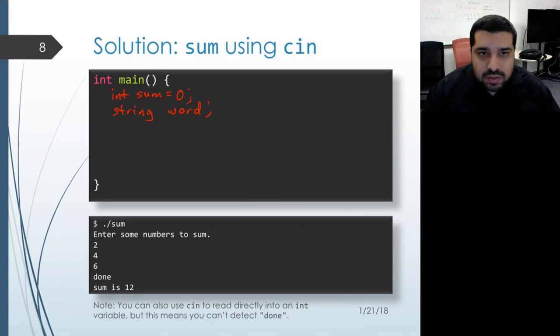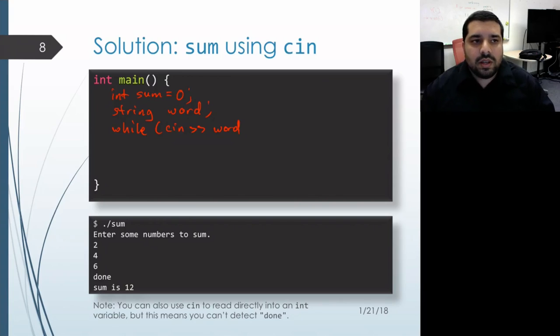Then what we'll do is extract one item at a time to our string variable and put this as part of the condition of a while loop. And the advantage of doing it this way is that if the extraction fails for any reason, for example if we hit the end of the stream, then this test will actually become false and the loop will exit.